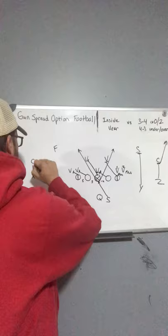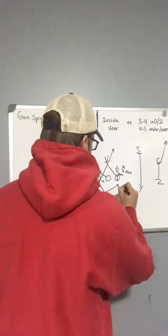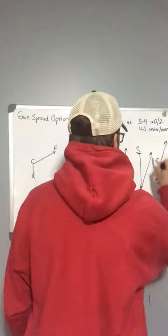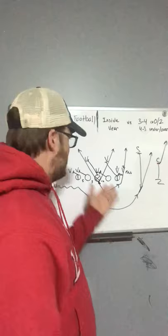He'll push out the corner, run to the free. W's got the pitcher out on this. And working down the line of scrimmage, you can get a good pitch relationship. Here's your key for your S. Read this double team. See what those backers are.